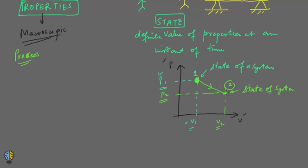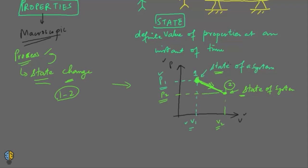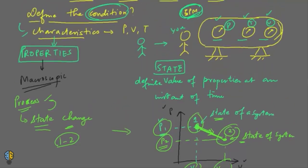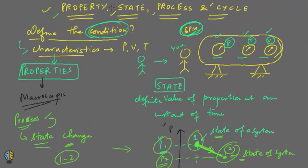From one state you have moved to the other state — this movement is called a process. This movement of the system from state 1 to state 2 is called a process. A process is defined as the change of state. Whenever there is a state change, a process is said to have occurred. In this diagram, process 1-2 occurs when the system changes from state 1 to state 2 and the properties also change from P1, V1 to P2, V2.